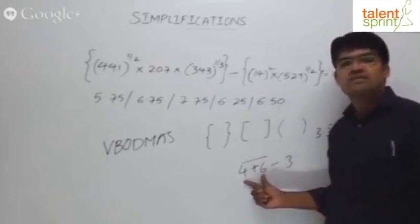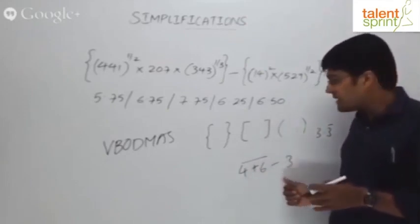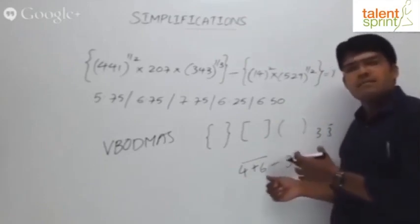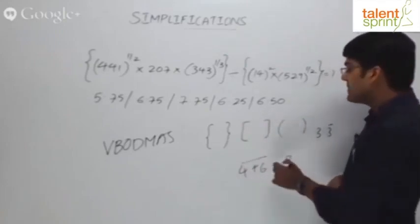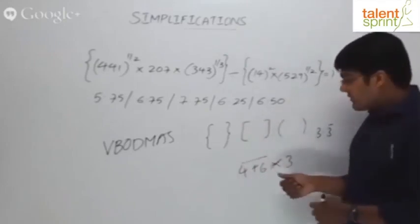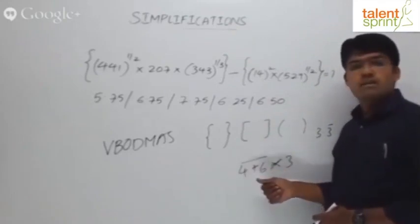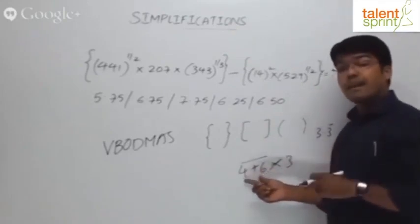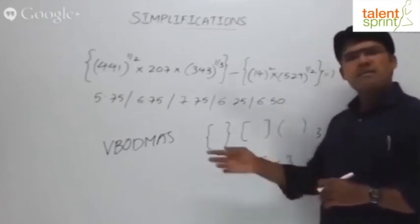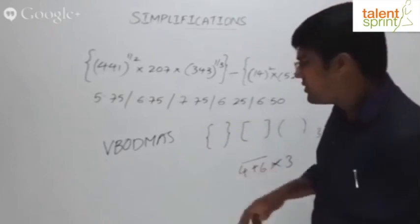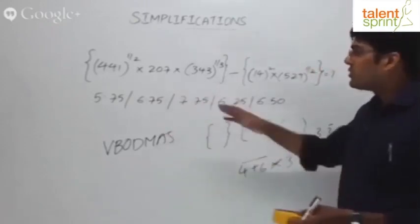If it is multiplication, you say 6 into 3, 18, 18 plus 4, 22 is the wrong answer. Why? 4 and 6 are inside the bracket. 10 into 3, 30 is the correct answer. So that's what is known as vinculum. But generally, you don't have to worry about that part. Try to simplify this part now.